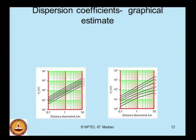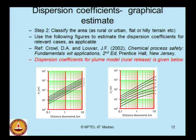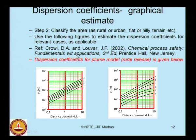Before explaining categories A through F, classify the area as rural or urban and whether the terrain is flat or hilly, since these significantly affect the dispersion coefficients and in turn the vapor cloud concentration. The figures from Crowell and Lover (2002) can be used to estimate sigma y and sigma z. For a rural release under the plume model, knowing the downwind distance in kilometers from the source, you can find sigma z and sigma y in meters for a given Pasquill stability class A through F.